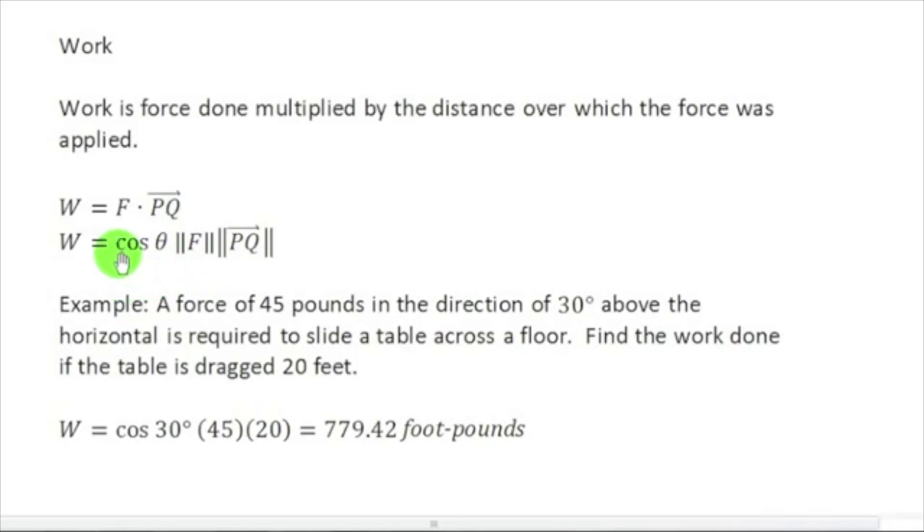Basically it works like this. If we have a force that's about 45 pounds being applied to a table and the angle of the force is being applied 30 degrees above the horizontal, and this is the amount of force required to push the table across the floor. We want to know if we drag the table 20 feet, how much work was done. We are measuring forces in pounds and distance in feet. So our unit at the end is going to be foot-pounds. So it's the cosine of 30 degrees times 45 pounds, that's my force, times the 20 feet that I'm actually going to be dragging that object. Which would simply give me 779.42 foot-pounds.